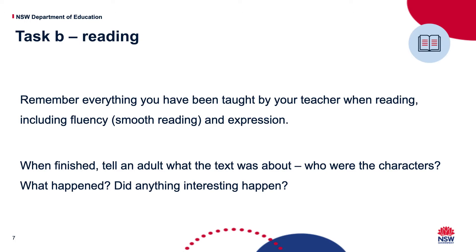Task B is reading. Remember your fluency, your expression, all of that. I want you to read aloud to yourself and then tell an adult - tell mum, tell dad, tell whoever you're there with - or get online and tell me on Class Dojo. What was the text about? Who are the characters in your text? What happened to the characters? Did anything interesting happen? Is it at the complication in the story? We're looking at narratives. So go read that and then talk about the book.